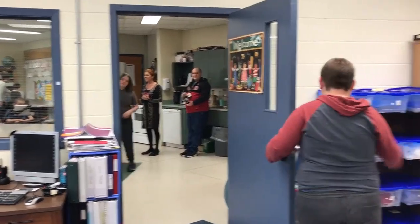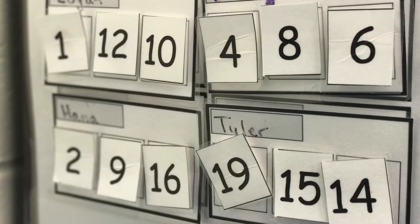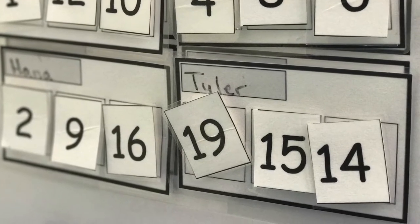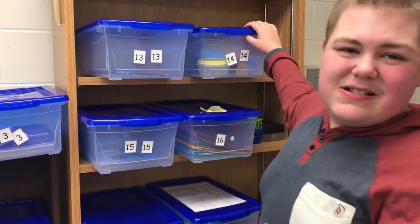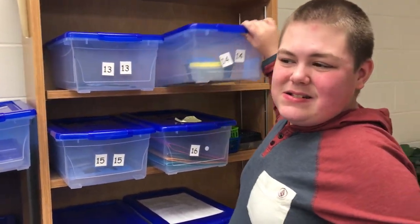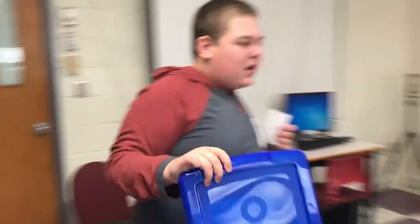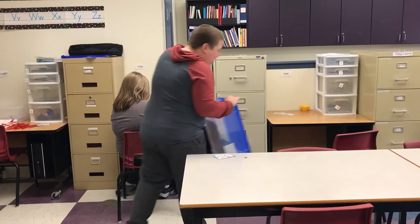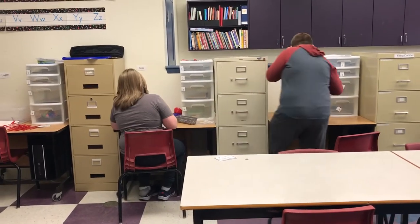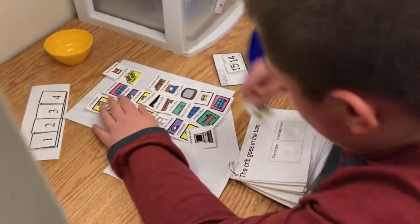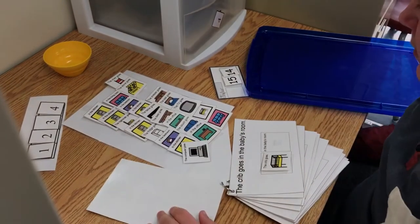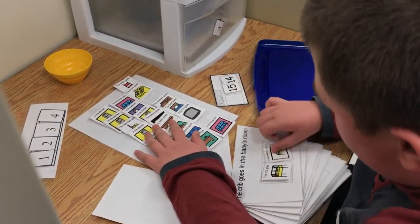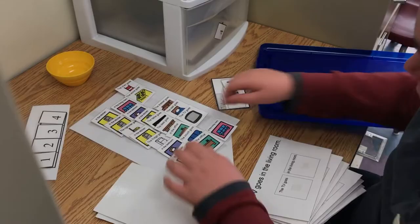The tasks are meaningful and respectful and tied to the individualized outcomes for that student. When a student enters a classroom, they would check the schedule to look at what the number is on the schedule, and then they would match that to the corresponding bin on the shelf. They would remove the bin from the shelving unit and bring it to a designated work area where they would complete the task independently. They would then check their schedule and continue completing bins until they've done all the tasks allotted on the schedule.